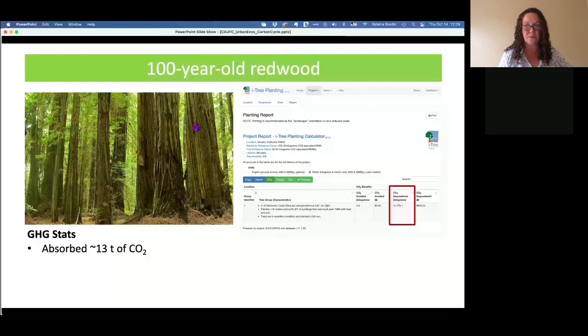i-Tree Planting will also tell us how much biomass is in that tree. If we take that tree, put it on a scale, evaporate all the water out of it, what we have left is about seven tons of tree matter. That means we have about three and a half tons of carbon, so about half of all that dry weight biomass of the tree is carbon.